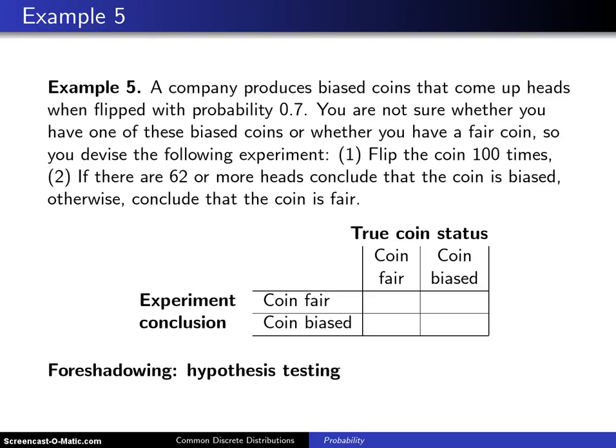A company produces biased coins that come up heads when flipped with probability 0.7. You are not sure whether you have one of these biased coins or whether you have a fair coin, so you devise the following experiment.